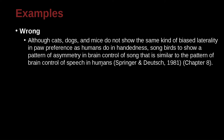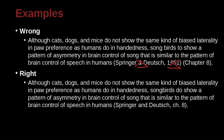Although cats, dogs, and mice do not show the same kind of biased laterality in paw preference as humans do in handedness, songbirds do show a pattern of asymmetry in brain control of song that is similar to the pattern of brain control in speech in humans — Springer and Deutsch, 1981, chapter 8. This looks like APA style. MLA does not use the year or the chapter reference that way. For MLA, it's just the authors with 'and,' a comma, and 'ch.' with a period, followed by the chapter number.